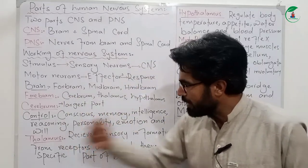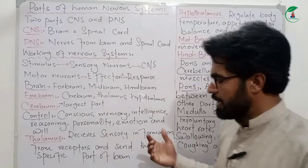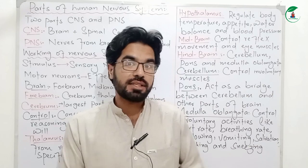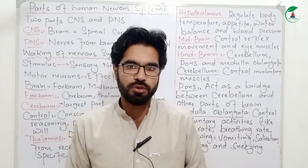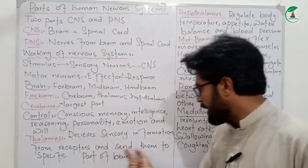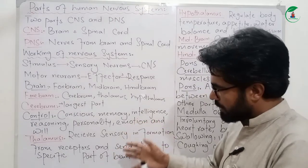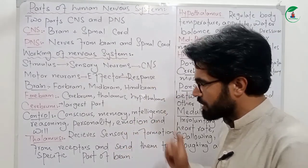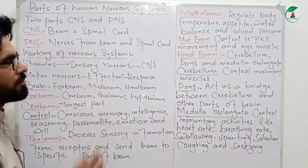If you have any information coming to the sensory organs, the Thalamus receives that sensory information and sends it to specific parts of the brain for processing.